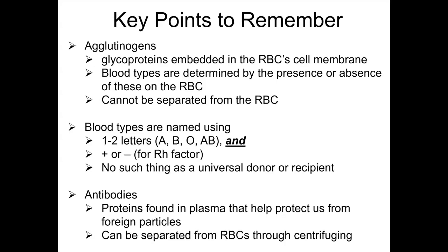Also very important to remember that you cannot separate the agglutinogens from their red blood cell. Blood types are determined using the presence or absence of particular agglutinogens, and we're going to talk about the ABO Rh system. So a blood type has one to two letters: A, B, O, and/or AB. O is the absence of A or B, so there is not an O agglutinogen. Think of O as zero A and B.